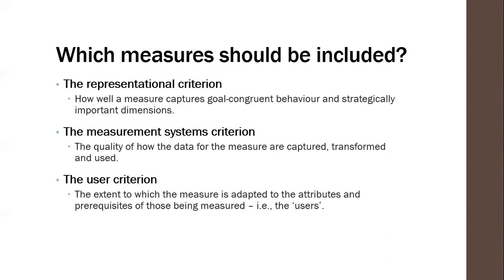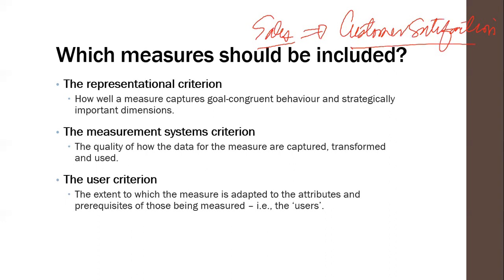For example, a common sales-related measure is customer satisfaction. Of course, we want our customers to be happy — so the representational criterion is clearly met. If customers are satisfied, they will continue to buy from you and it encourages goal-congruent behavior: your managers will be more conscious about being friendly to customers and making sure customers are happy.